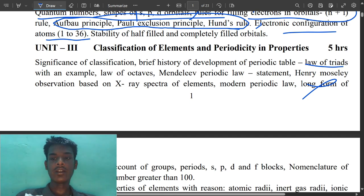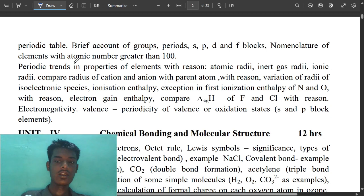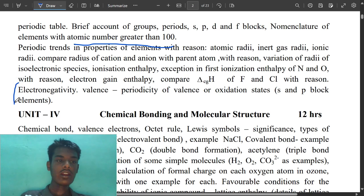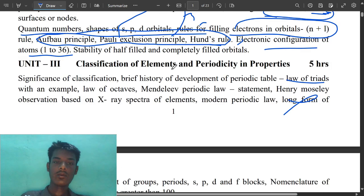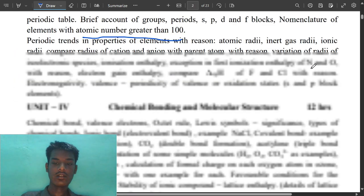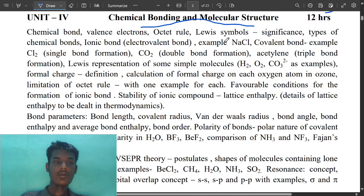Mendeleev's modern periodic table. This is asking MCQ. Electronegativity, isoelectronic species, electron gain enthalpy, ionization energy - this is all important. But you have studied in class 10th only, so you don't need to give much importance to this chapter. Chemical bonding and molecular structures - this is a very confusing chapter because this contains major marks.